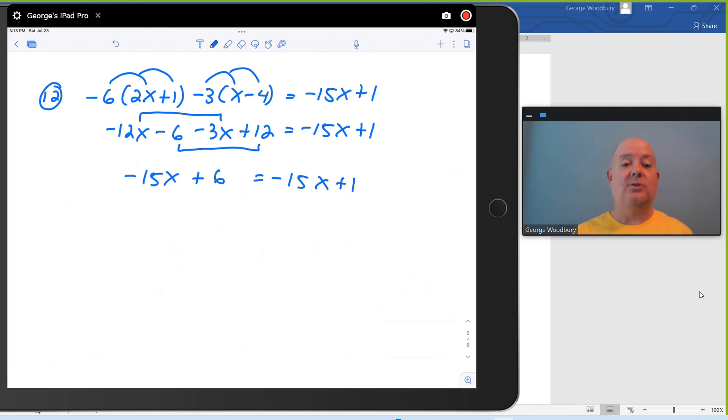If I'm going through the motions of solving this, the next thing I would do is add 15x to both sides to try to combine, collect all the variable terms on the same side of the equation. But negative 15x and 15x combined to be 0. Those both basically disappear and I'm left with the equation 6 equals 1. This is false. This is what we call a contradiction.